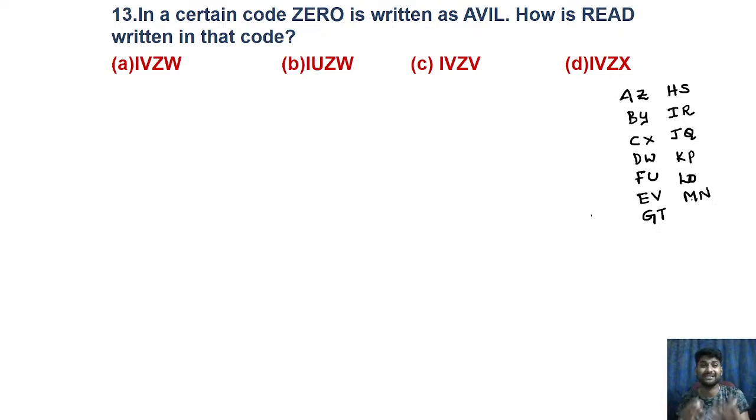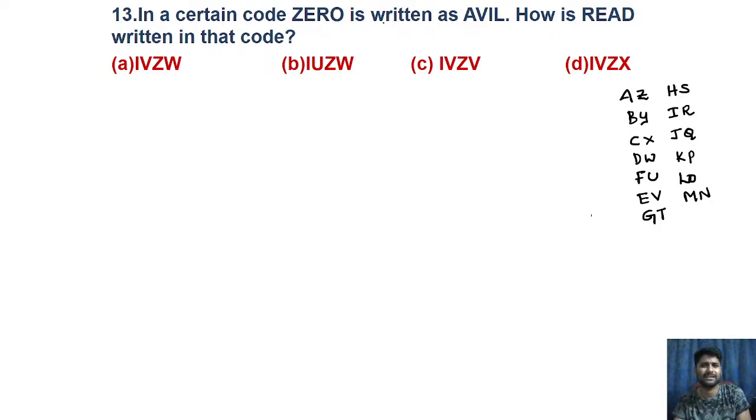You can frame your own words to remember — the intention is to memorize all opposite pairs so you can understand these coding questions very easily. In a certain code language, 'zero' is written as A, V, I, L. Then how is it written?